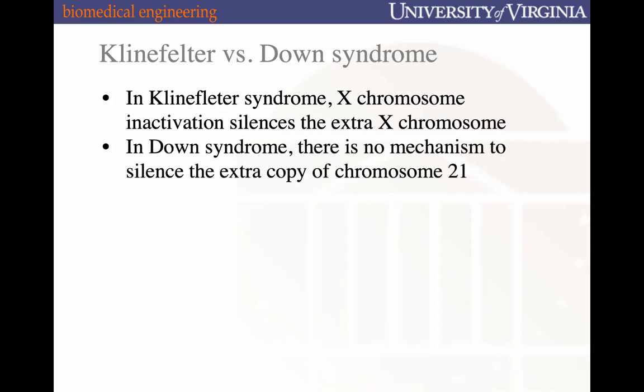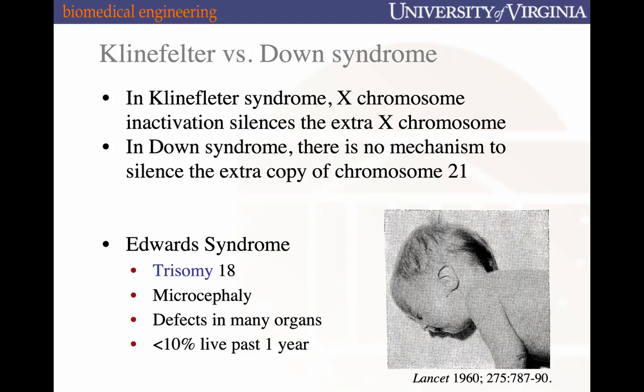In Down syndrome, there is no mechanism to silence the extra copy of chromosome 21, so despite chromosome 21 being small, the lack of any inactivation leads to a more severe clinical presentation compared to Klinefelter. Another trisomy disorder, Edward syndrome (trisomy 18), involves a third copy of chromosome 18, leading to defects in many organs, microcephaly, and fewer than 10% of patients surviving past one year. Trisomy 18 is one of the disorders screened for during prenatal genetic testing.